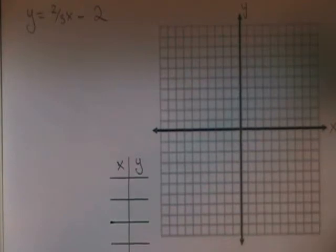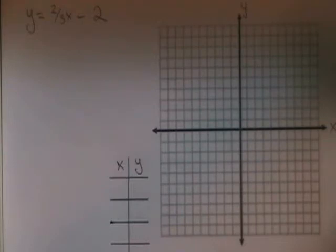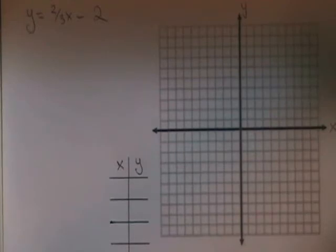This video will illustrate how to graph a straight line. To graph a straight line, we must find three points and put them in a table of values, and then graph those three points on a coordinate plane and draw a straight line through them.